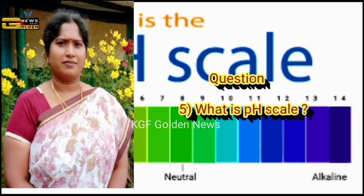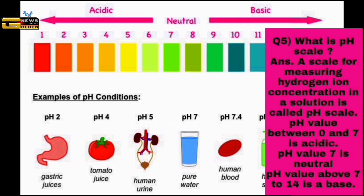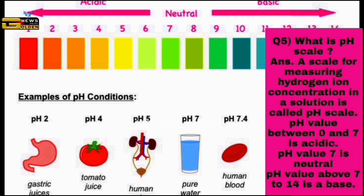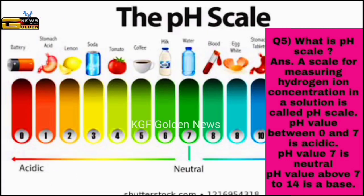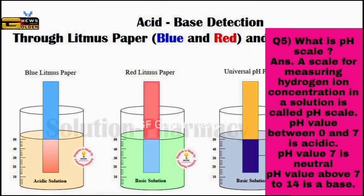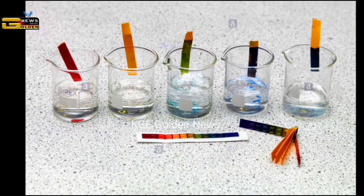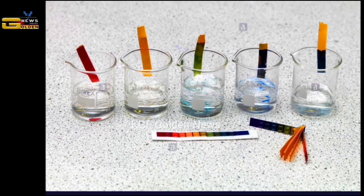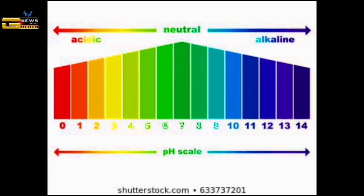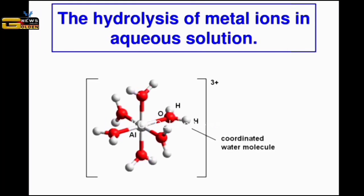Question number five: what is pH scale? The answer is, a scale for measuring hydrogen ion concentration in a solution is called pH scale. pH value between 0 and 7 is acidic. pH value 7 is neutral. pH value above 7 to 14 is a base. Values less than 7 on the pH scale represent an acidic solution. As the pH value increases from 7 to 14, it represents an increase in the hydroxyl ion concentration in the solution.